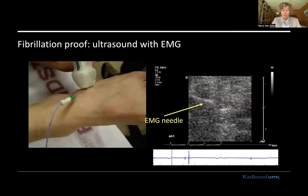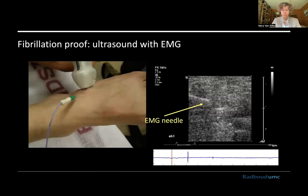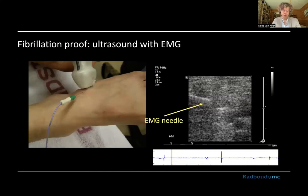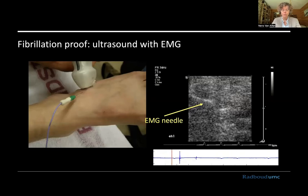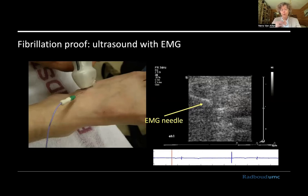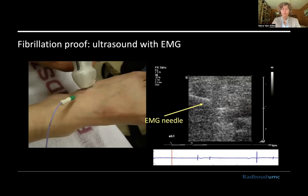We also did a study where we de-innervated extensor digitorum brevis muscles using botulinum toxin as part of an experiment with end plate zones. As a side test, we inserted an EMG needle — which you can see in the zoomed-in ultrasound image — and recorded the ultrasound and EMG needle signal simultaneously. And these are just fibs. If you've heard them before, you'll recognize them.